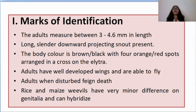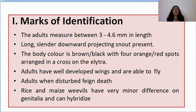Marks of identification: the adults measure 3 to 4.6 millimeters in length. The snout is long, slender, and projecting downwards. The color of the body is brown to black with four orange-red spots arranged in a cross on the elytra. Adults have well-developed wings and can fly. Adults when disturbed feign death. Rice and maize weevils have very minor differences on the genitalia and they can hybridize.